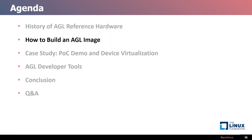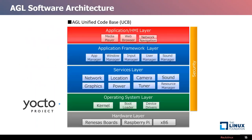I'll explain how to build an AGL image for reference hardware. This figure shows the AGL software architecture. The AGL unified code base, called AGL-UCB, consists of five layers. The application and HMI layers contain applications with their relevant business logic and HMI. Applications may use a web-based framework or native framework.